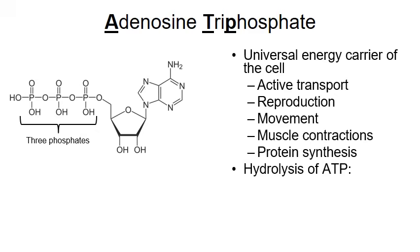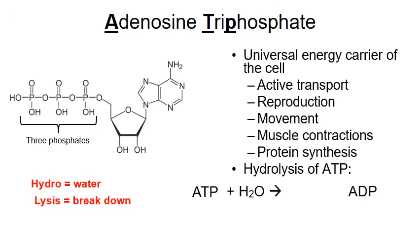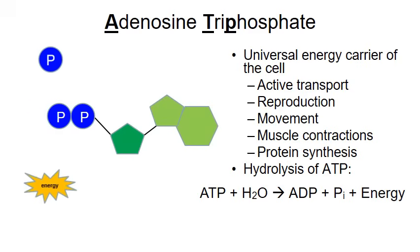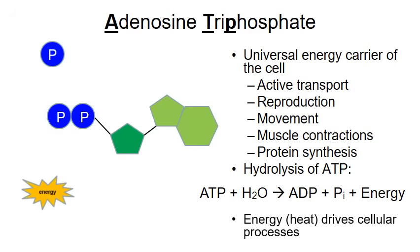In the hydrolysis of ATP — hydro means water, lysis means to break down — ATP with water will yield ADP, a single phosphate, and energy. It's this energy that powers the cell. In this simplified diagram, water and an enzyme break off the third phosphate, releasing energy that drives cellular processes.